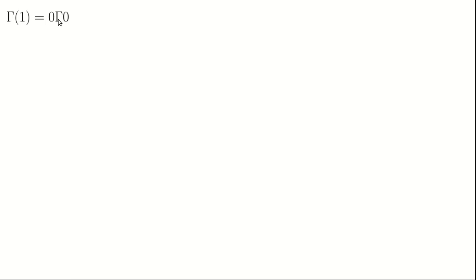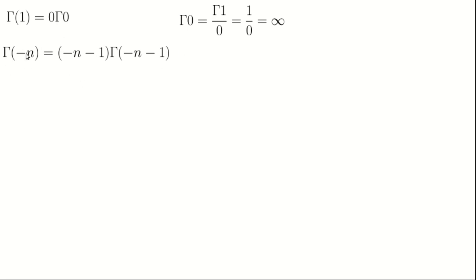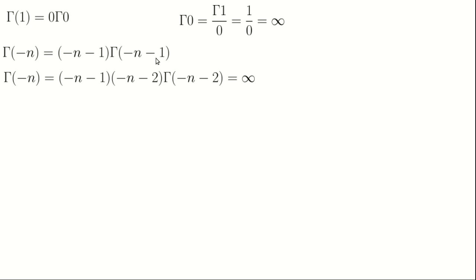Since gamma(1) equals 1 times gamma(0), we can rearrange to get gamma(0) equal to gamma(1) divided by zero, which equals 1 over 0, giving infinity. So gamma(0) equals infinity. Similarly, gamma(minus n) expands using the recurrence relation and the expression continues down to infinity, so gamma of any negative integer also equals infinity.